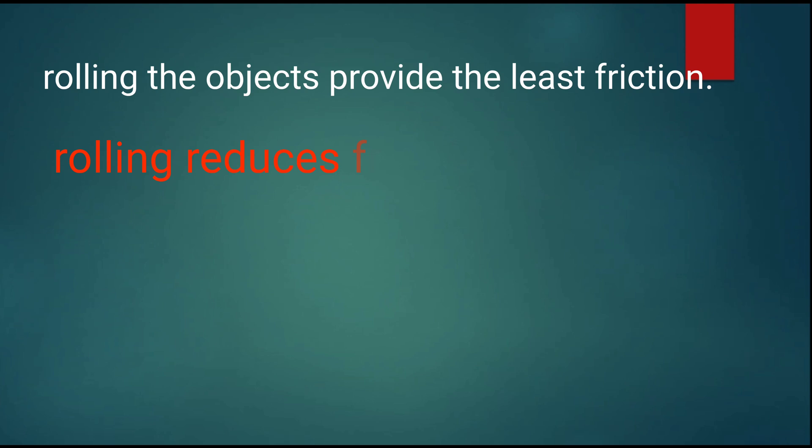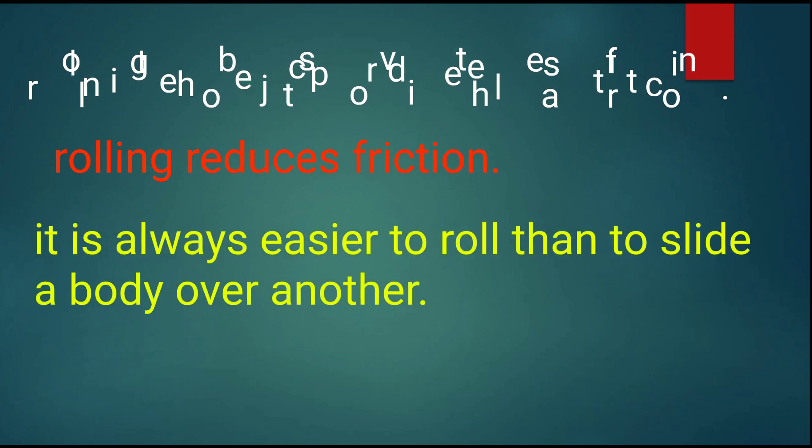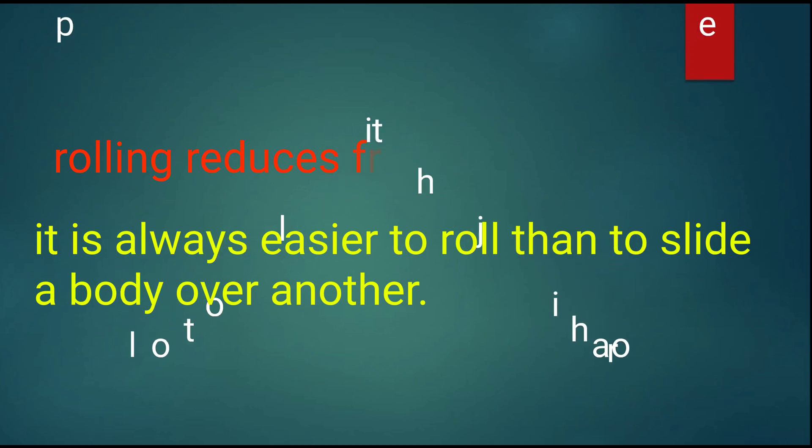Rolling an object provides the least friction. Rolling reduces the friction. It is always easier to roll than to slide a body over another.